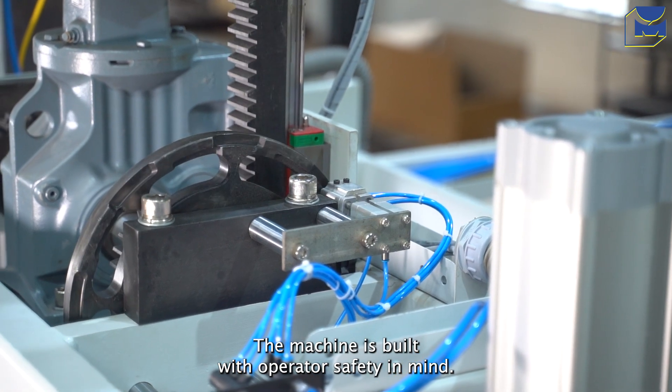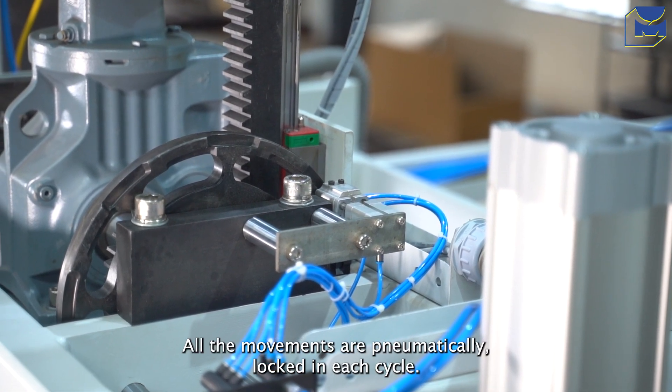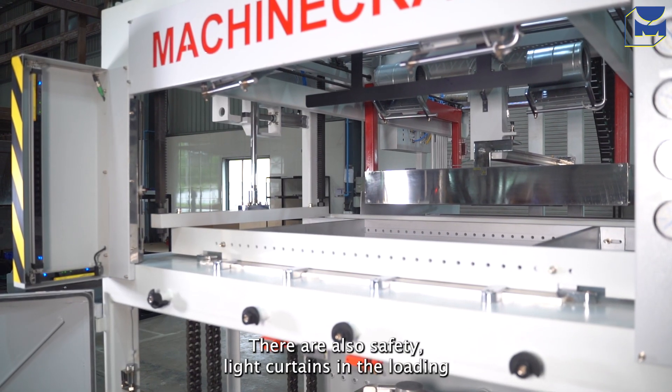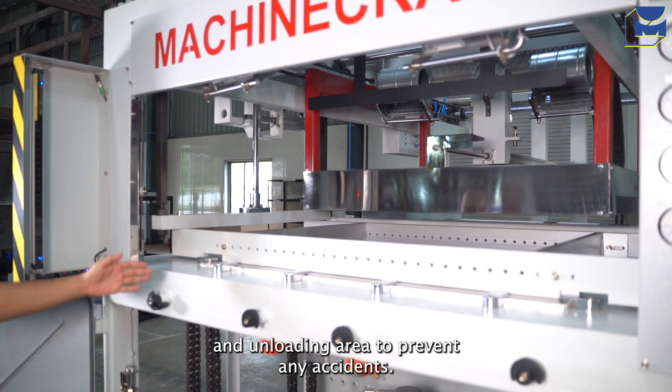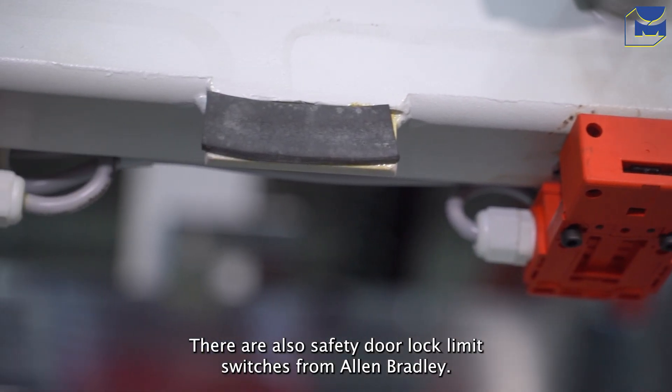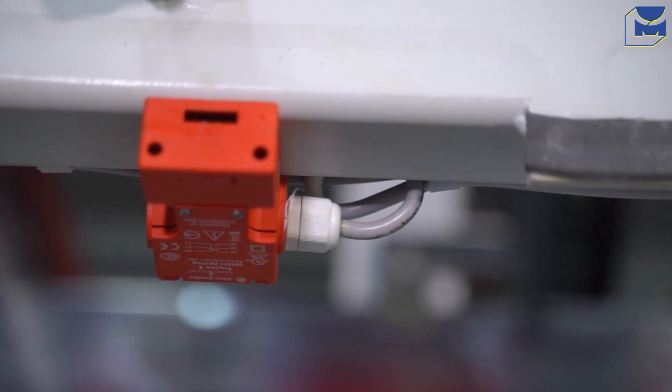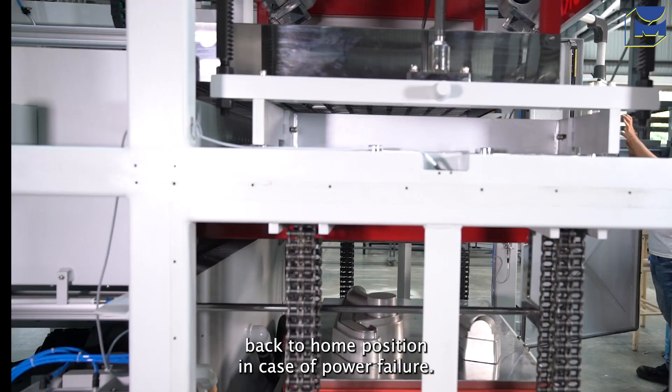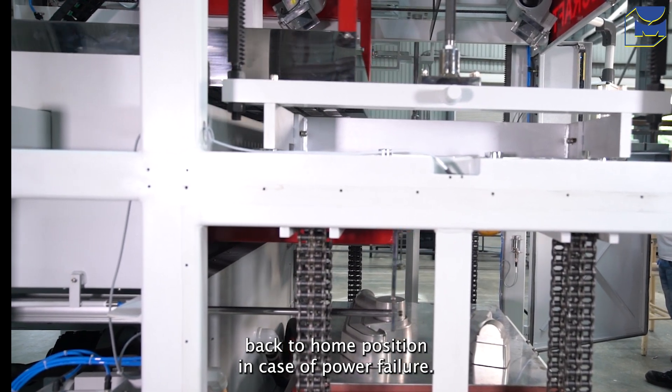The machine is built with operator safety in mind. All the movements are pneumatically locked in each cycle. There are also safety light curtains in the loading and unloading area to prevent any accidents. There are also safety door lock limit switches from Allen Bradley. There is also an independent pneumatic cylinder to pull the heaters back to home position in case of power failure.